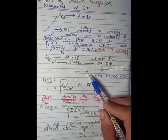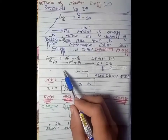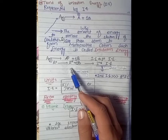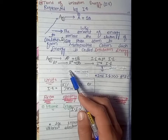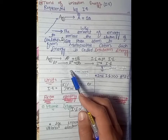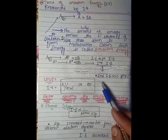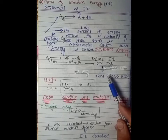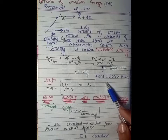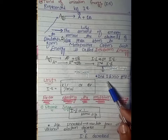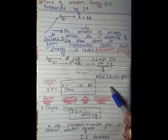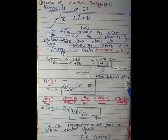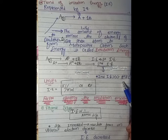When the second electron is ejected, the energy required is called the second ionization energy. The second ionization energy is very much larger than the first ionization energy.